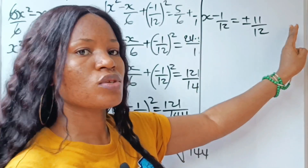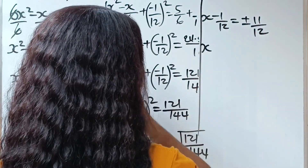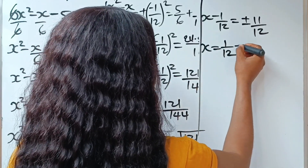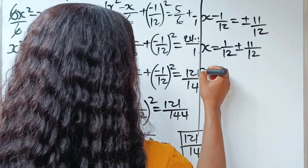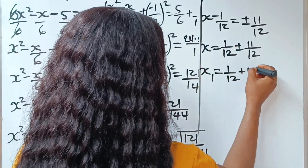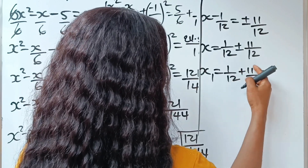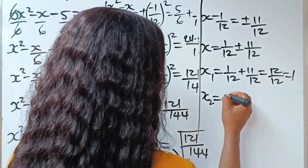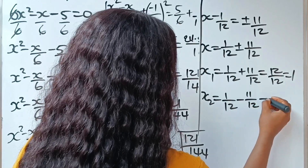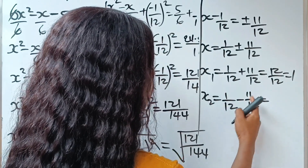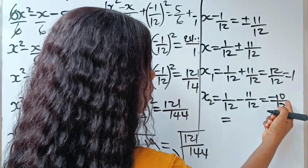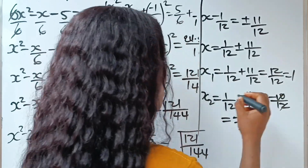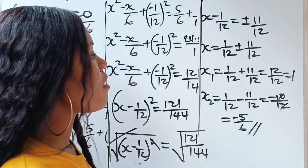At this point, we transfer the minus 1 over 12 to the other side, where it becomes plus 1 over 12. So x is equal to 1 over 12 plus or minus 11 over 12. The first value of x is 1 over 12 plus 11 over 12, which is 12 over 12, equal to 1. The second value of x is 1 over 12 minus 11 over 12, which is minus 10 over 12, reduced to its lowest term giving minus 5 over 6. Thank you so much for watching and have a lovely day.